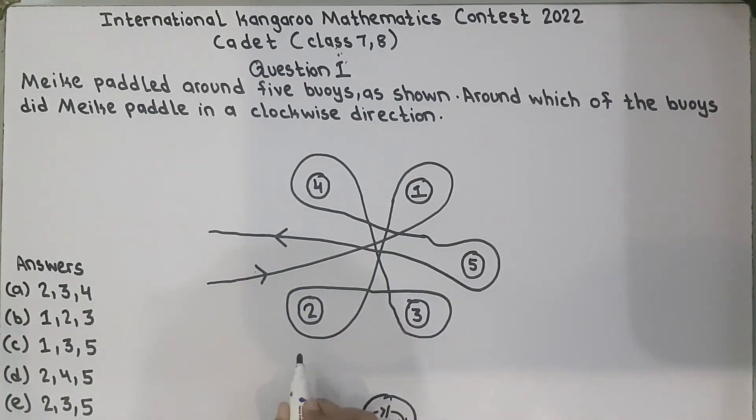So he moved clockwise on these buoys, around buoys 2, 3, and 5. 2, 3, and 5 and option E was correct and the question solved. Well, it was an easy one.